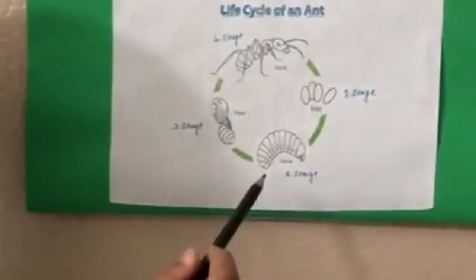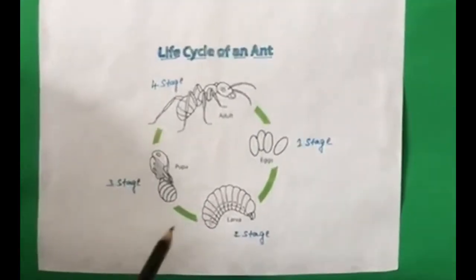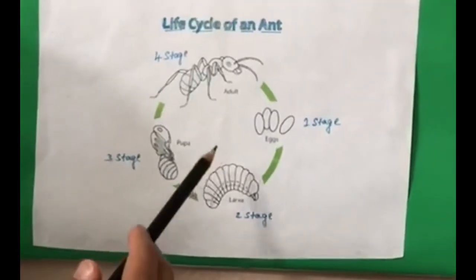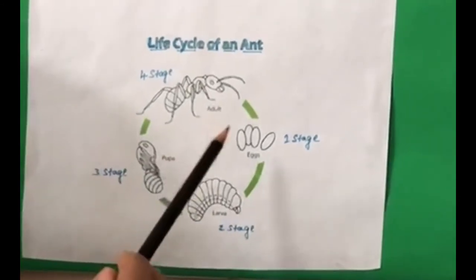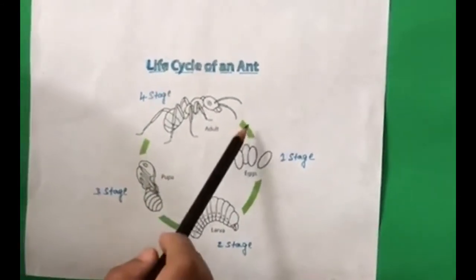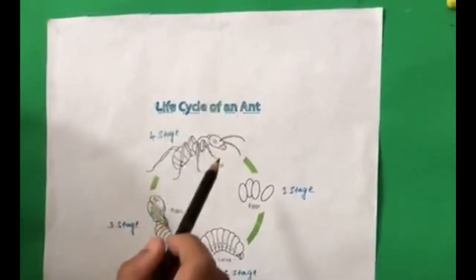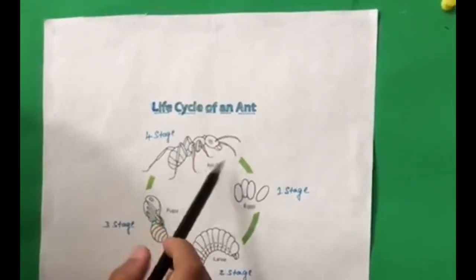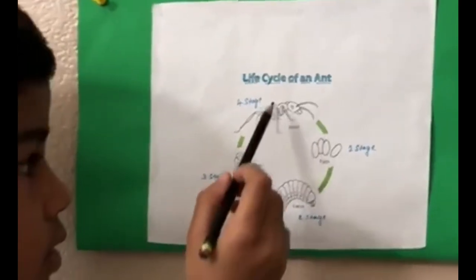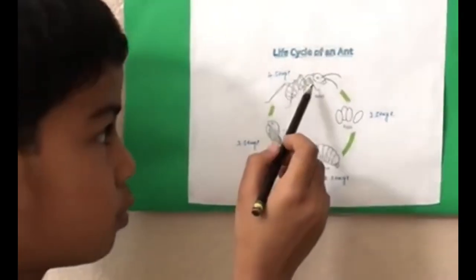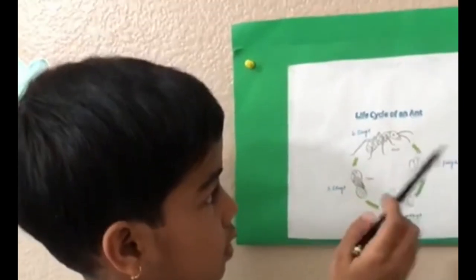Fourth stage: adult ant. The entire process takes six to ten weeks. Queens can live up to thirty years. Workers can live up to seven years.